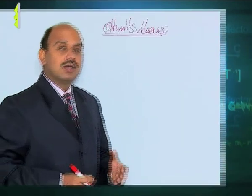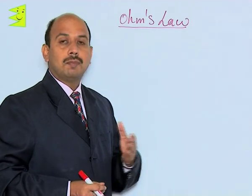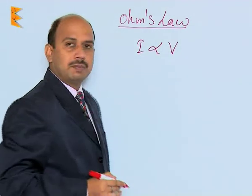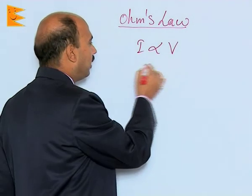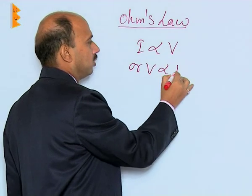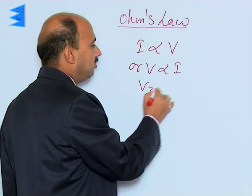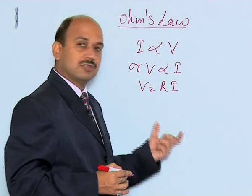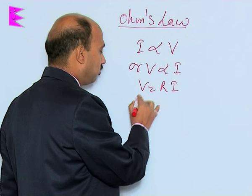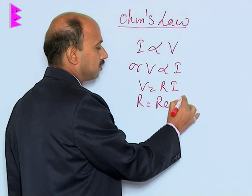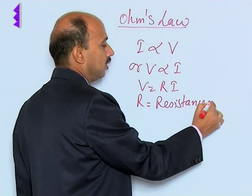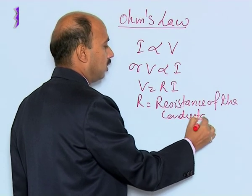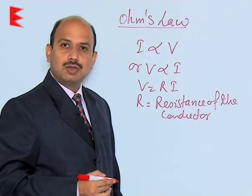Under this condition, current is directly proportional to the applied potential difference. According to Ohm's law, we can write I is proportional to V, or V is proportional to I. We can also write V equals R times I, where R is the proportionality constant, known as the resistance of the conductor.